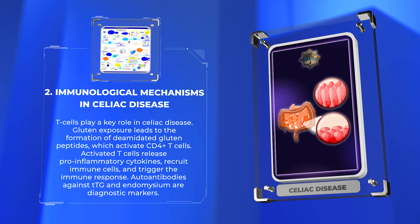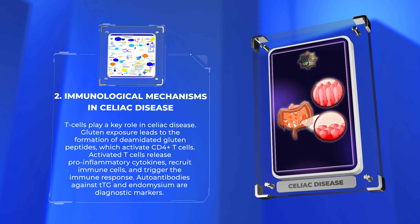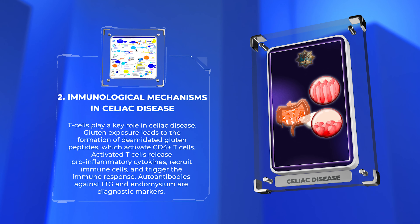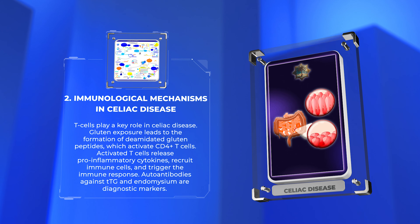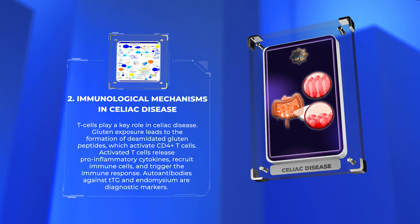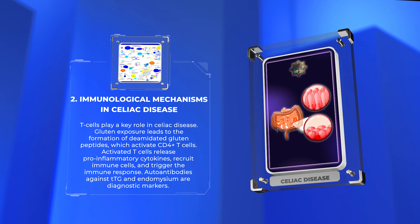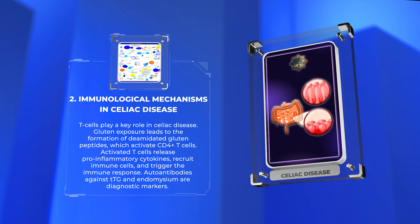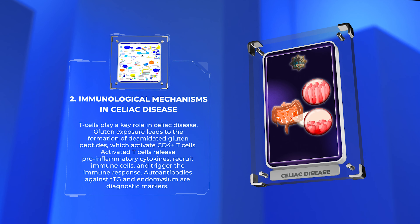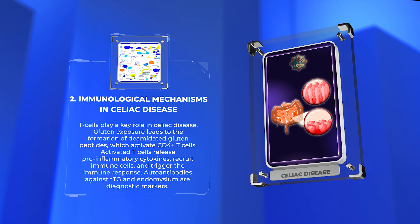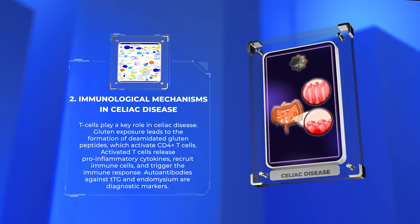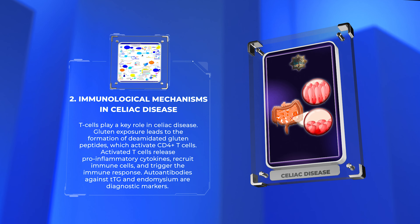T cells play a key role in celiac disease. Gluten exposure leads to the formation of deamidated gluten peptides, which activate CD4+ T cells. Activated T cells release pro-inflammatory cytokines, recruit immune cells, and trigger the immune response. Autoantibodies against T-TG and endomysium are diagnostic markers.